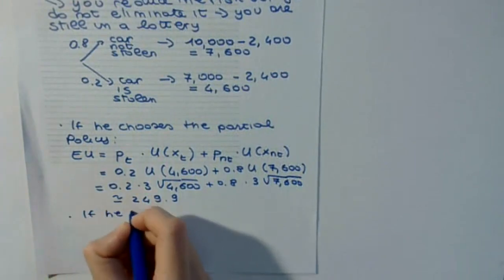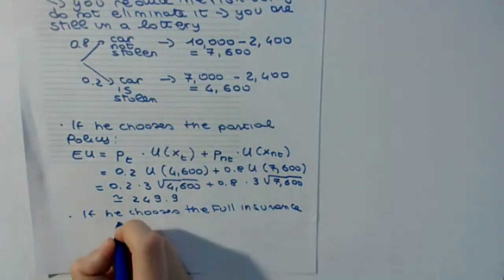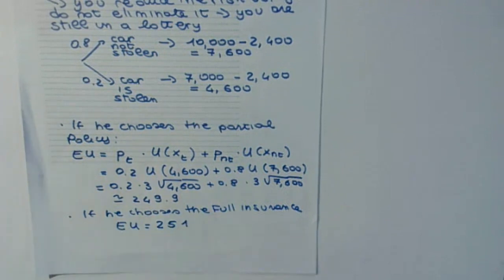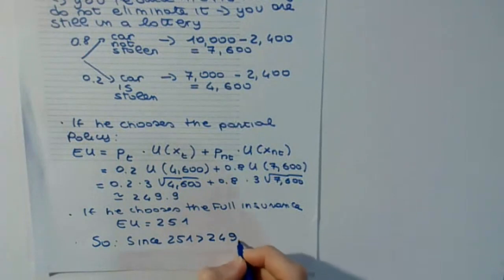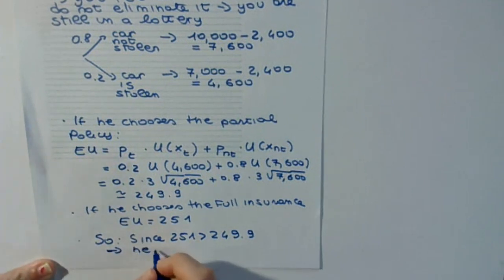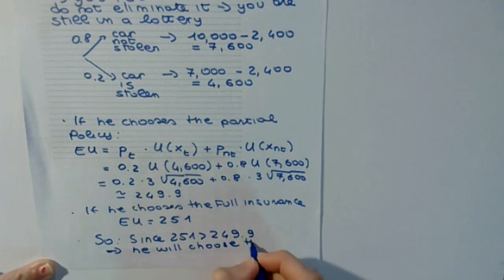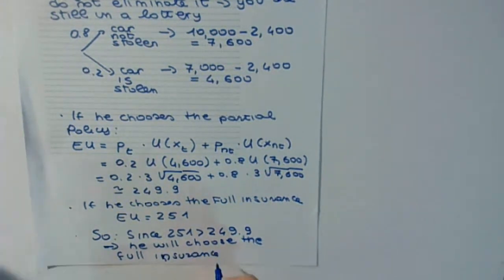We know that if he chooses the full insurance, his utility is 251. Since 251 is larger than 249.9, Mark will choose the full insurance over the partial insurance. Mark is better off choosing the full insurance in this case.